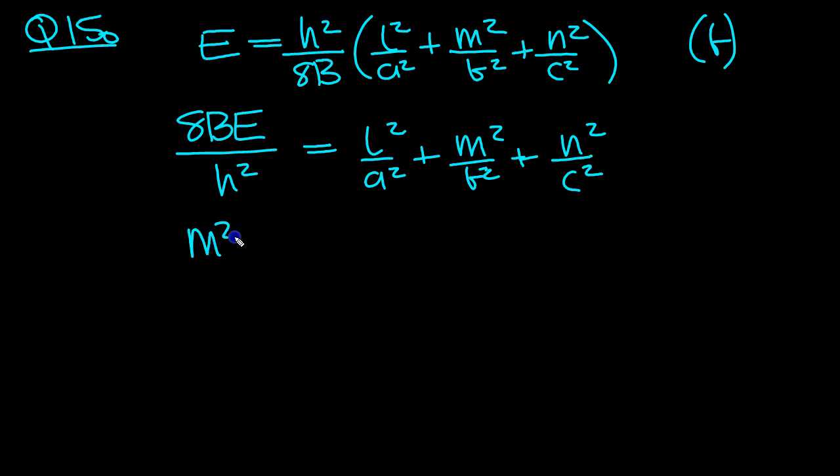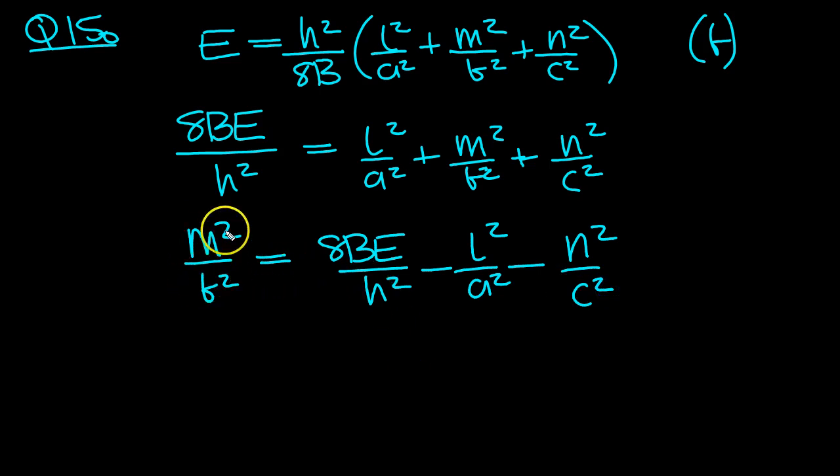We've got M squared over B squared is equal to this 8BE, I'm reading from right to left, 8BE over H squared minus this term, L squared over A squared minus this term, N squared over C squared. OK, so we're nearly there.